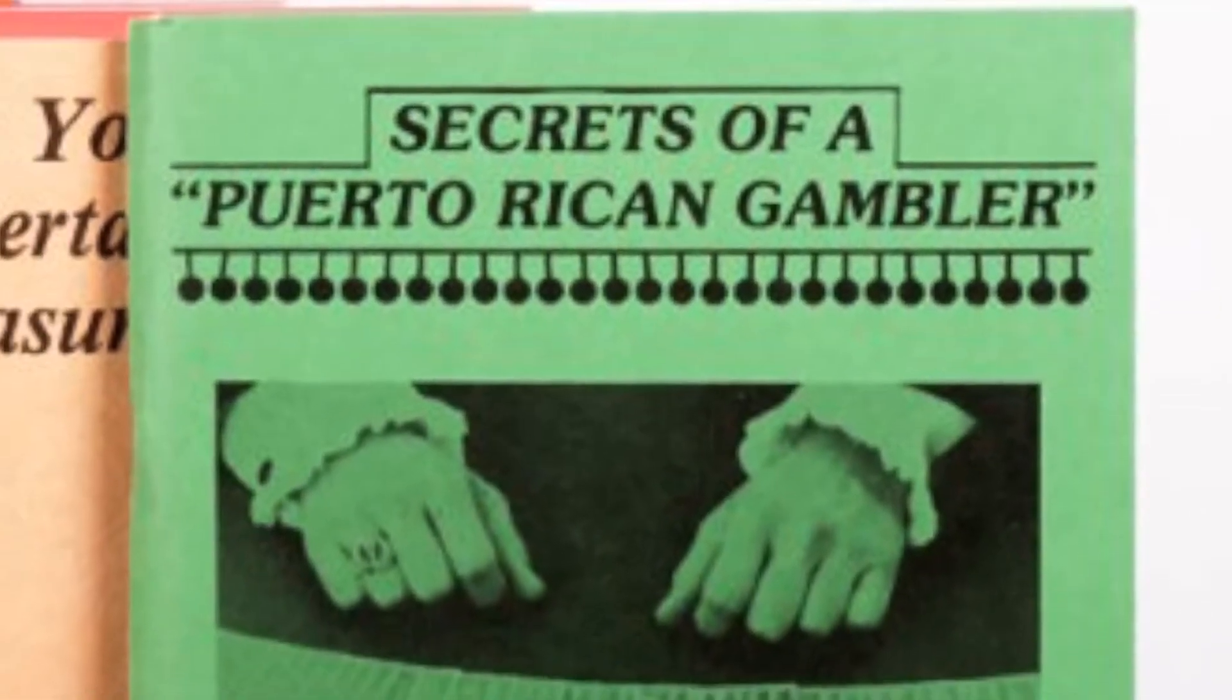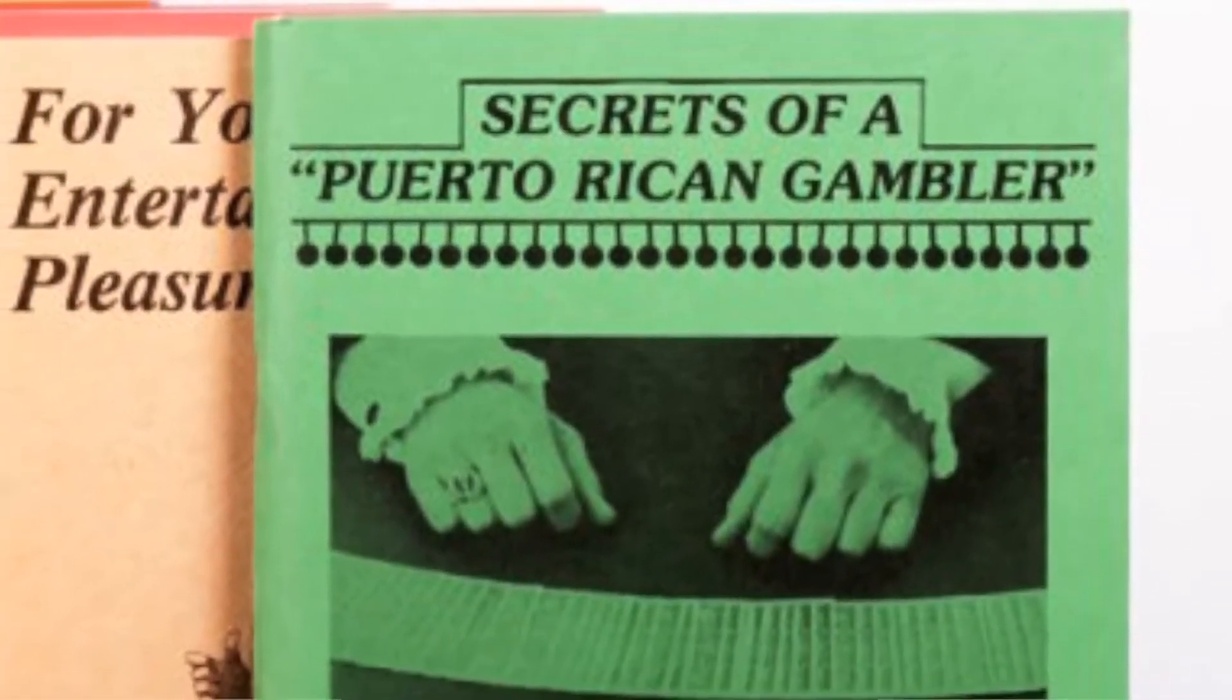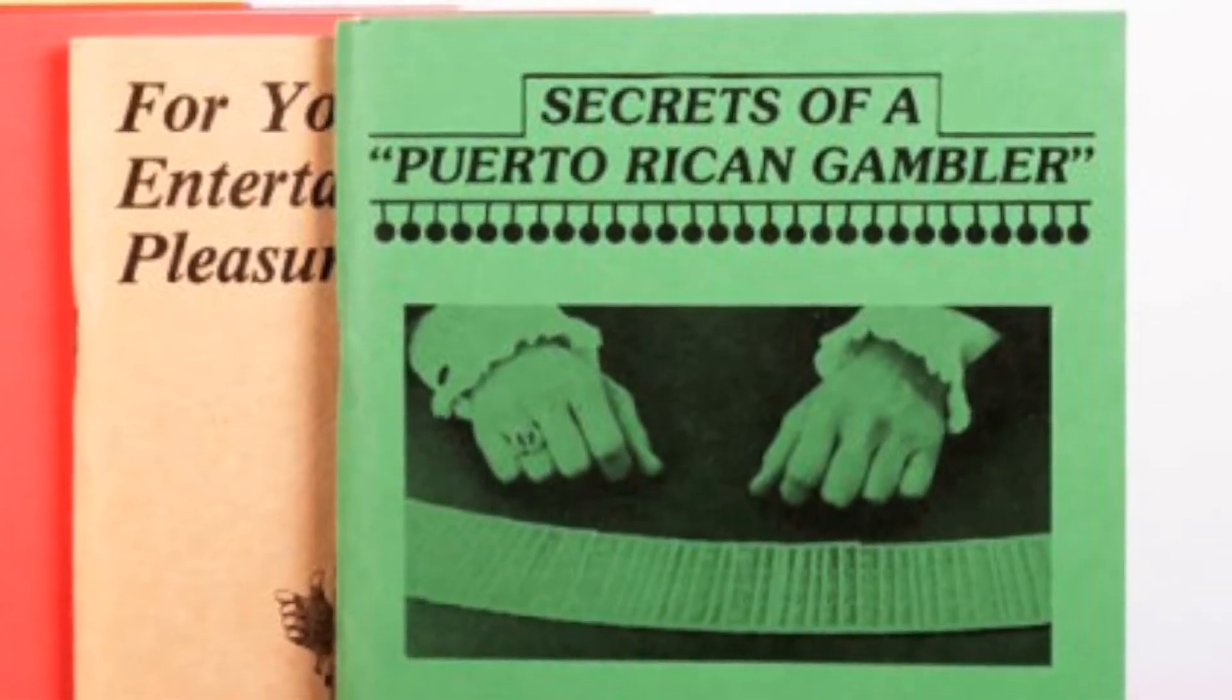Shortly afterward, he wrote the sequel For Your Entertainment Pleasure. And these books were originally printed in what we call the old style with very few pictures and simply saddle stapled in the middle.